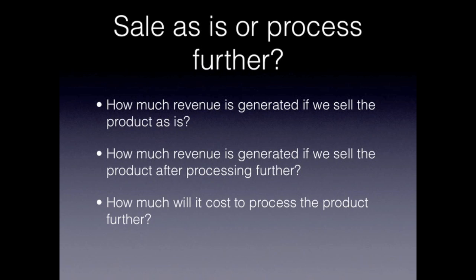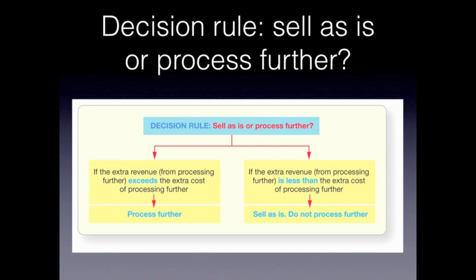Now let's look at the decision rule: should we sell as is or process further? If the extra revenue from processing further exceeds the extra cost of processing further, then we should go through with processing the product further. If the extra revenue from processing further is less than the extra cost involved in processing further, then we should sell as is and do not process the product further.